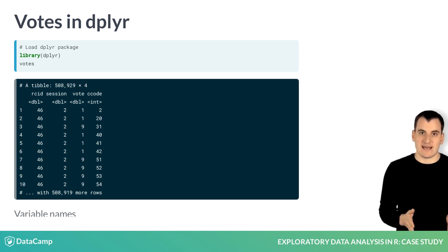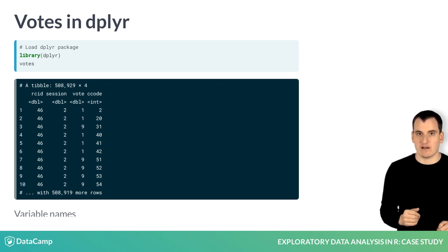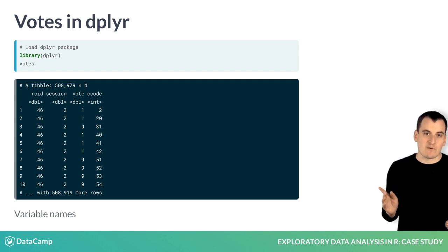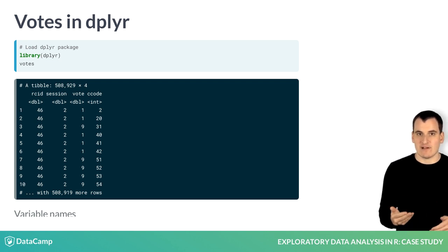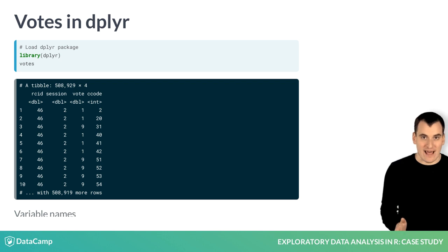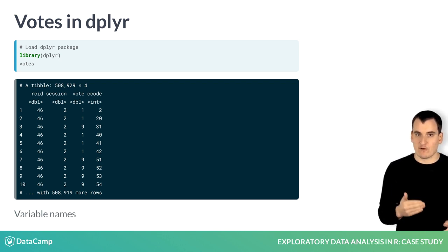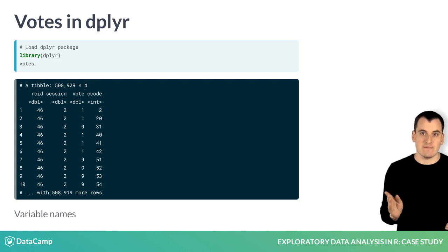Then we can view the votes data set by simply typing votes into the R prompt. Here you can see each of the columns of the table, as well as the table's size: 508,000 rows. As with almost any data set you'll run into, you need to clean this data before we can start analyzing it. Let's review one of the most important tools for performing multiple sequential steps on data, the pipe operator.